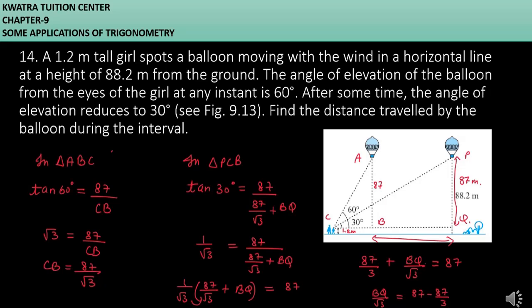If you want to subtract BQ value, then BQ under root 3 over 3, so BQ over under root 3 equals 174 over 3.